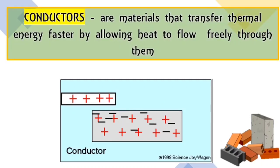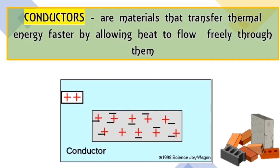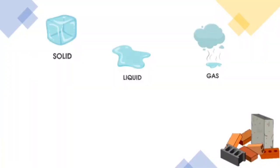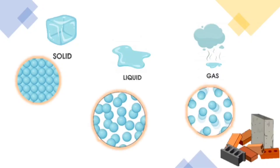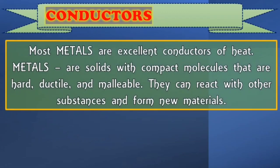When we say conductors, these are materials that transfer thermal energy faster by allowing heat to flow freely through them. Generally, solids are better conductors than liquids and gases. This is because the particles in solids are closer, making it easier for particles in solids to transfer energy. Most metals are excellent conductors of heat. Metals are solids with compact molecules that are hard, ductile, and malleable. They can react with other substances and form new materials.